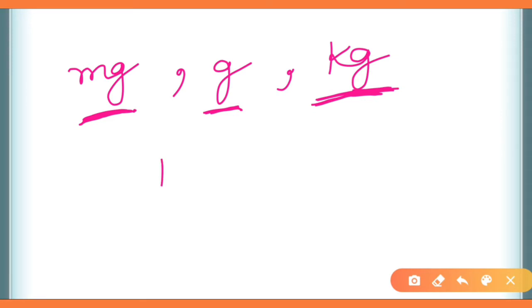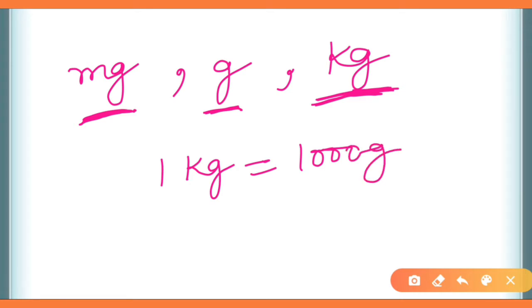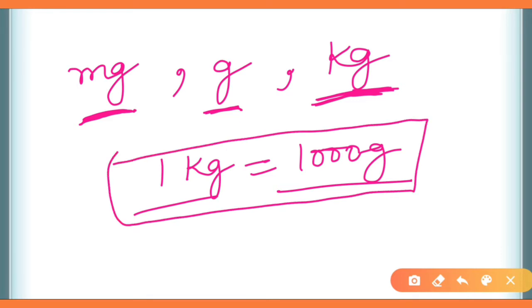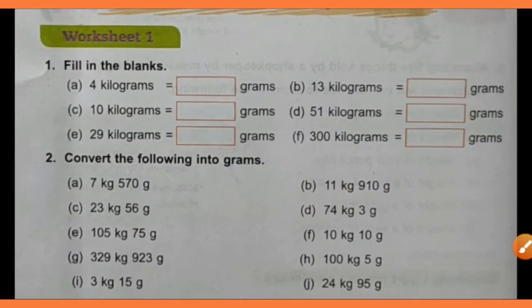Kilogram is the standard unit of weight. We have also studied that 1 kilogram is equal to 1000 grams. So your worksheet number 1 is exactly based on this relation: 1 kilogram is equal to 1000 grams.